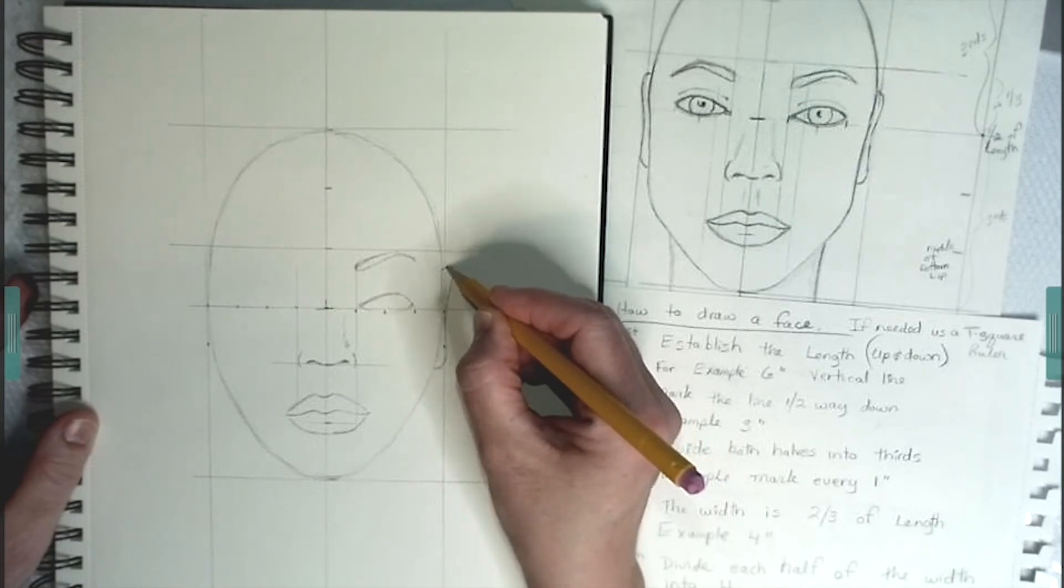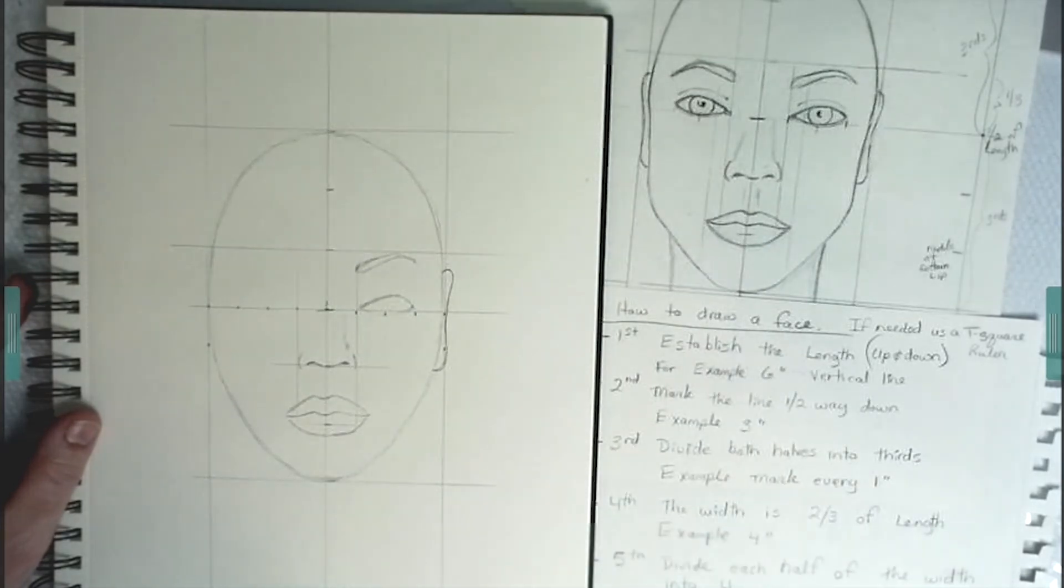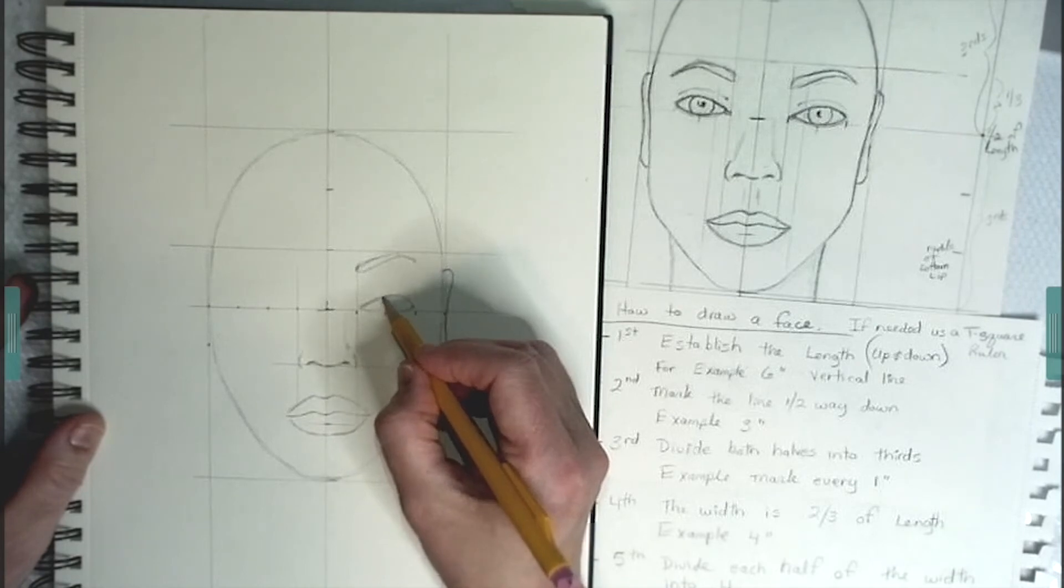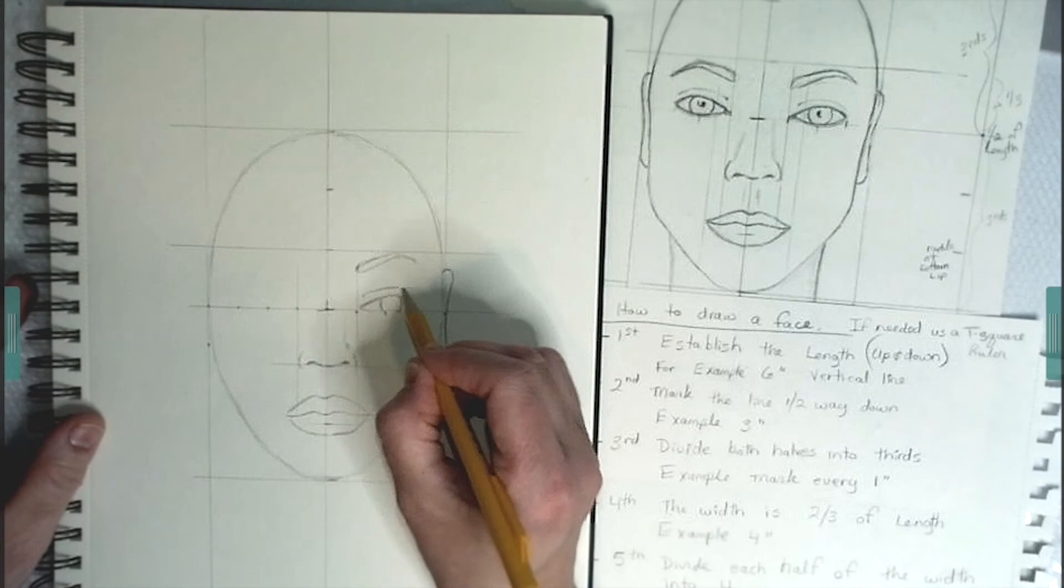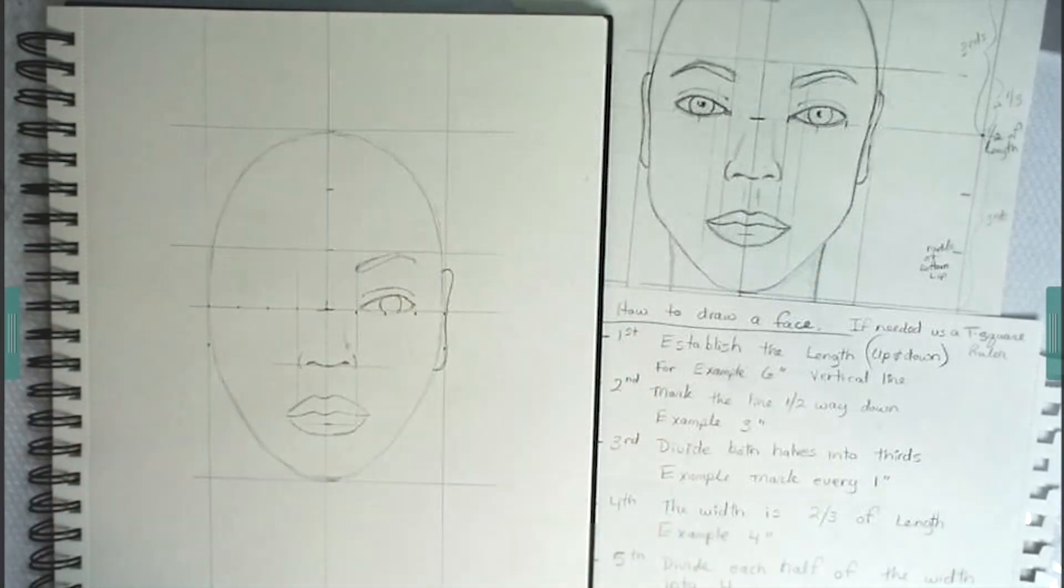The ear goes from the bottom of the eyebrow to the bottom of the nose. Then you can draw the pupils. And also the line above the eye. And now all you have to do is the other side before you start adding the details.